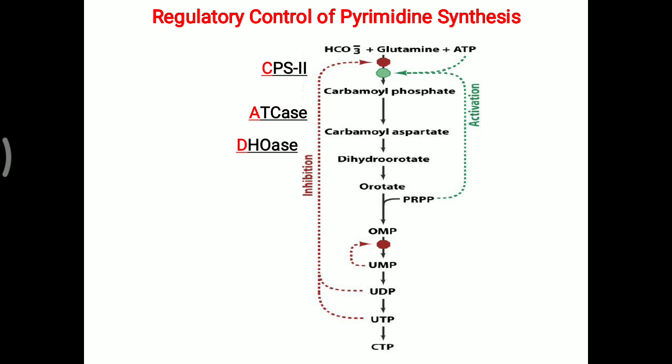These three — CPS2, ATKs, and DHOase — are the most important cytosolic enzymes, and these three combinedly are called a multi-enzyme complex for the pyrimidine synthesis. Commonly, it is also known as CAD, C-A-D. The most important regulation involves this CAD multi-enzyme complex.